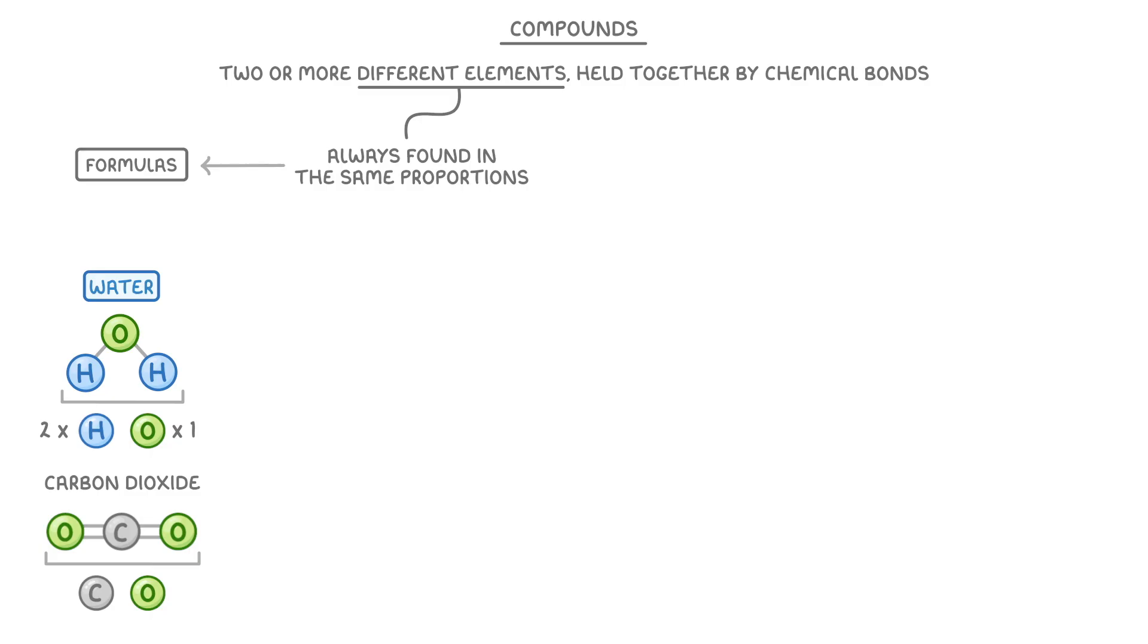So the formula for water would be H2O, with the two written in subscript, which means it's smaller and slightly lower down. And this signifies that there are two hydrogens in the molecule. Whereas if there was only one atom of that element, like with oxygen, then we wouldn't write any number in subscript.